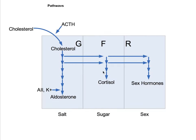The adrenal cortex is stimulated by ACTH, which comes from the anterior pituitary. CRH from the hypothalamus acts on the anterior pituitary to cause release of ACTH. After cholesterol enters, it goes through several enzymatic steps. The three layers - glomerulosa, fasiculata, and reticularis - produce aldosterone, cortisol, and sex hormones like testosterone, respectively.